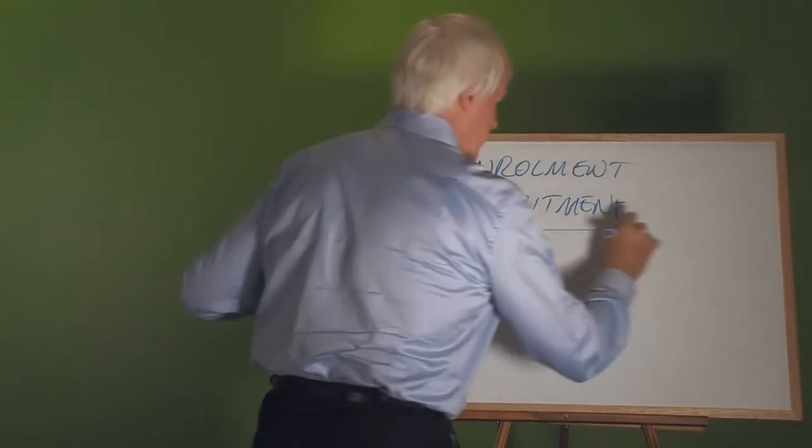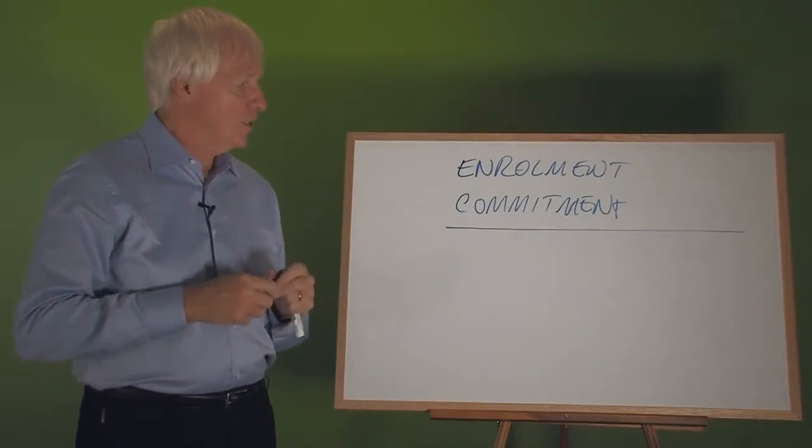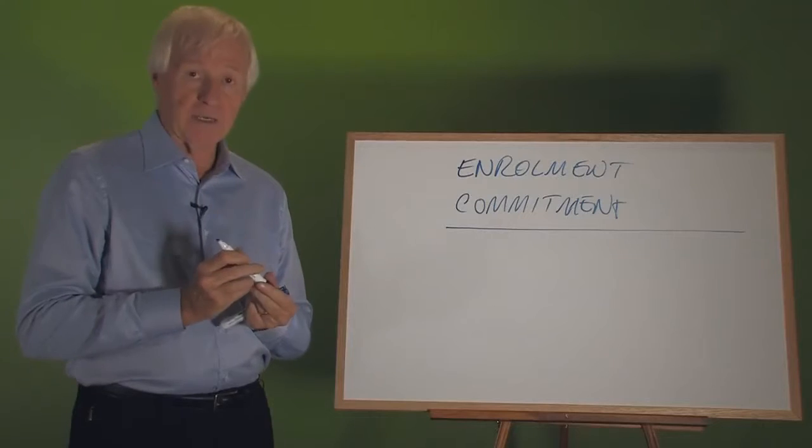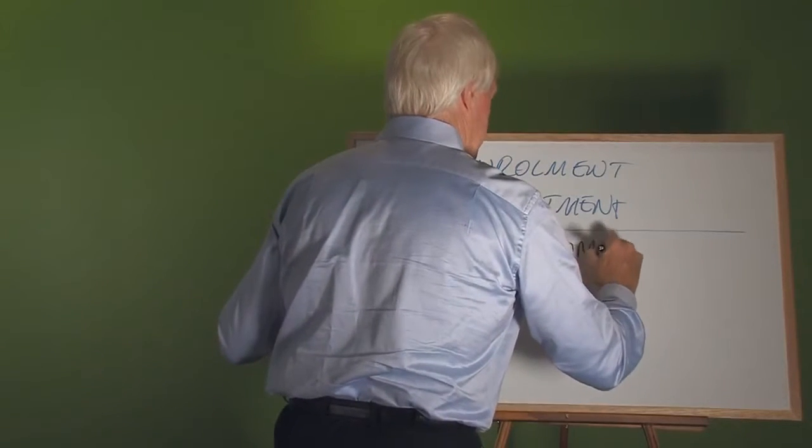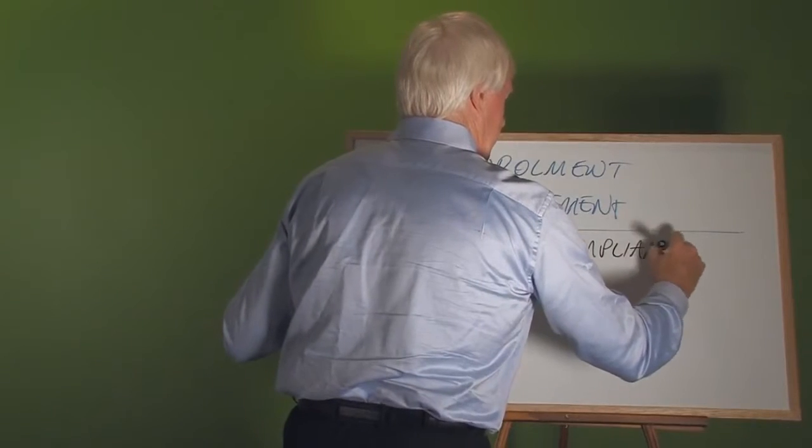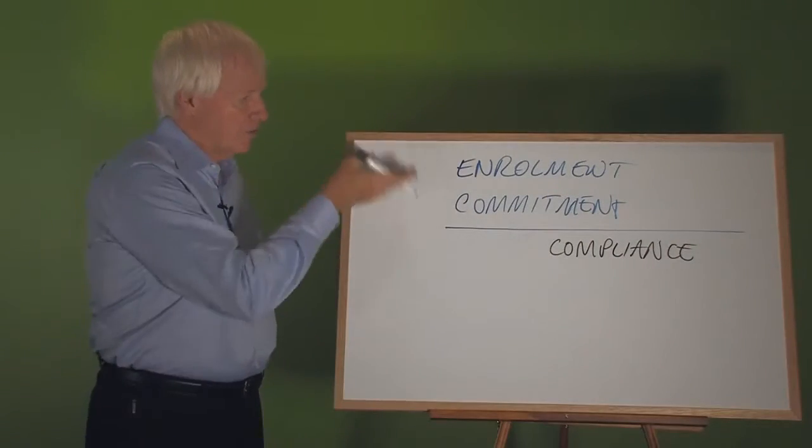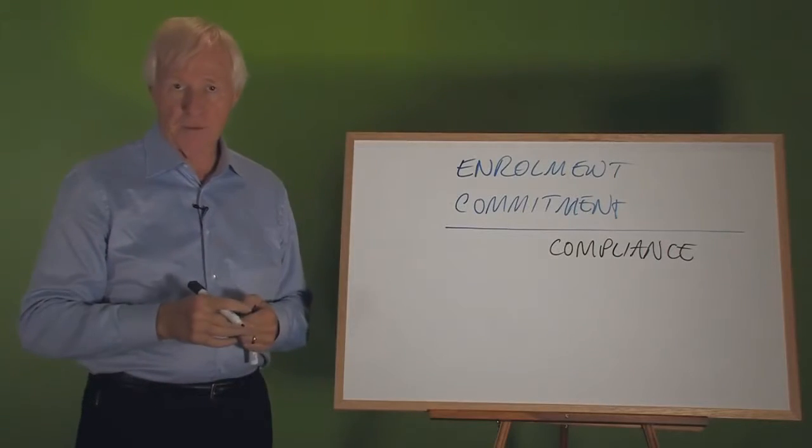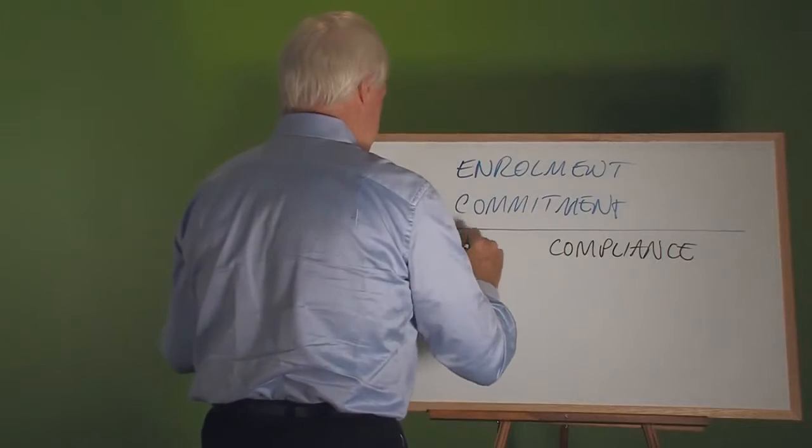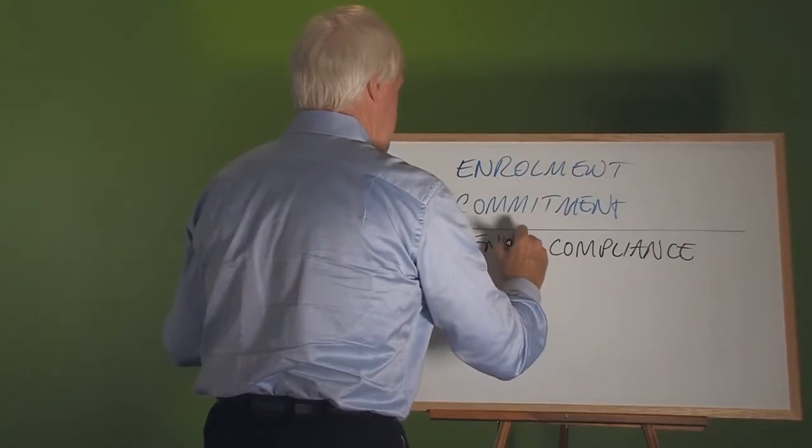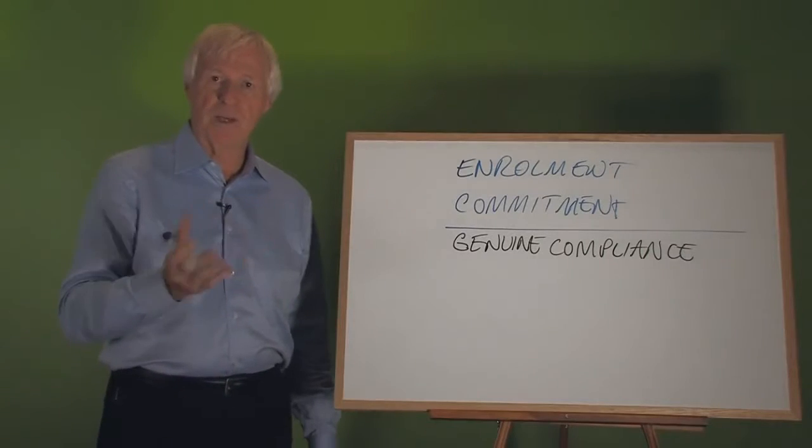Now the issue of course is there's a big line because below commitment you're not going to generate the same kind of enthusiasm, and everything under here is compliance. I'm complying with the direction that has been set by the group. Now there may be varying levels of it, in fact there are four levels of it. There's genuine compliance saying, yep, it's the right thing to do and I'll support it to the best of my ability.